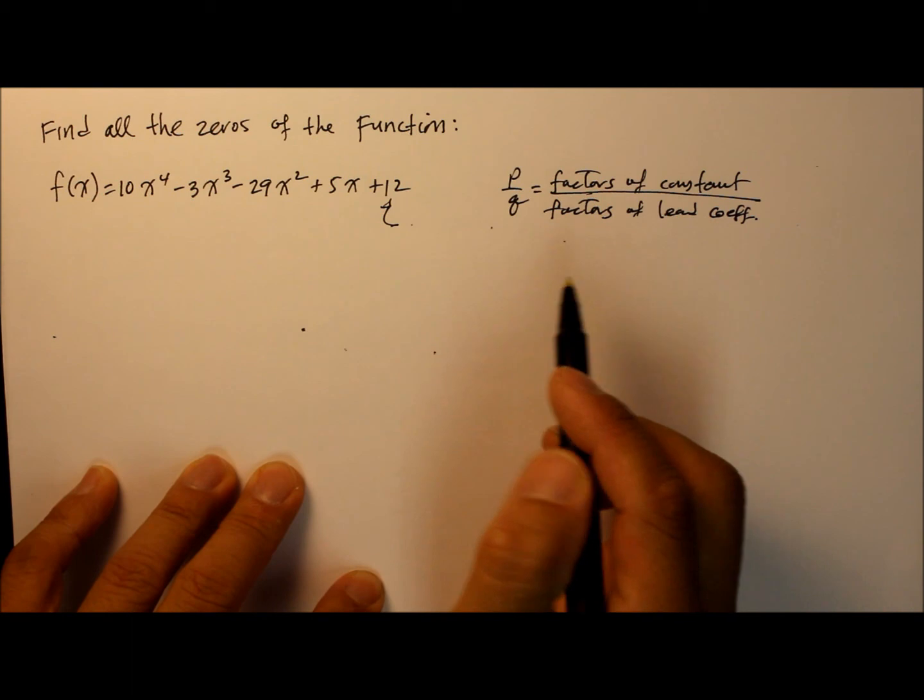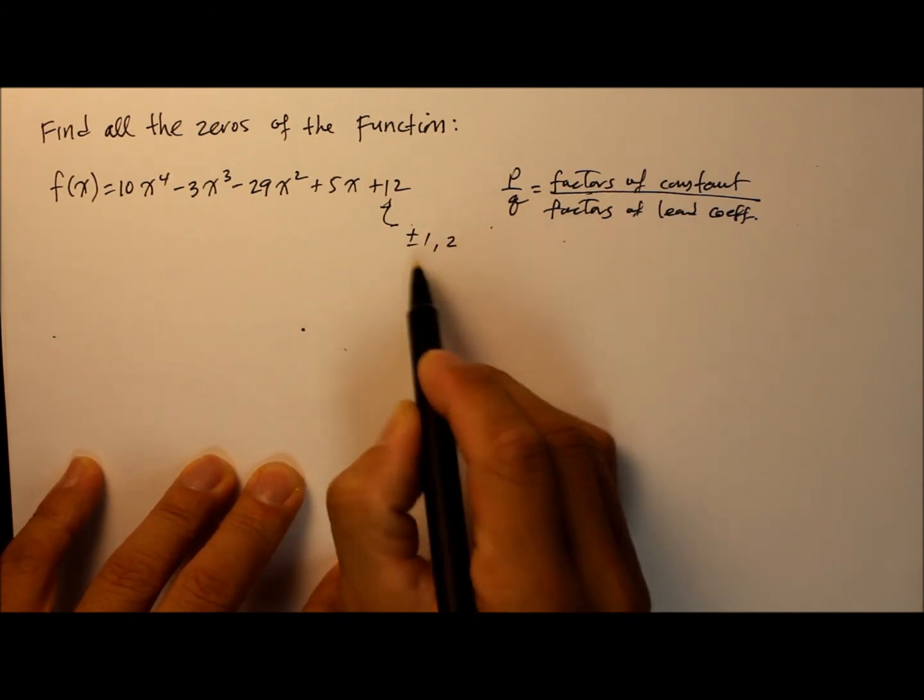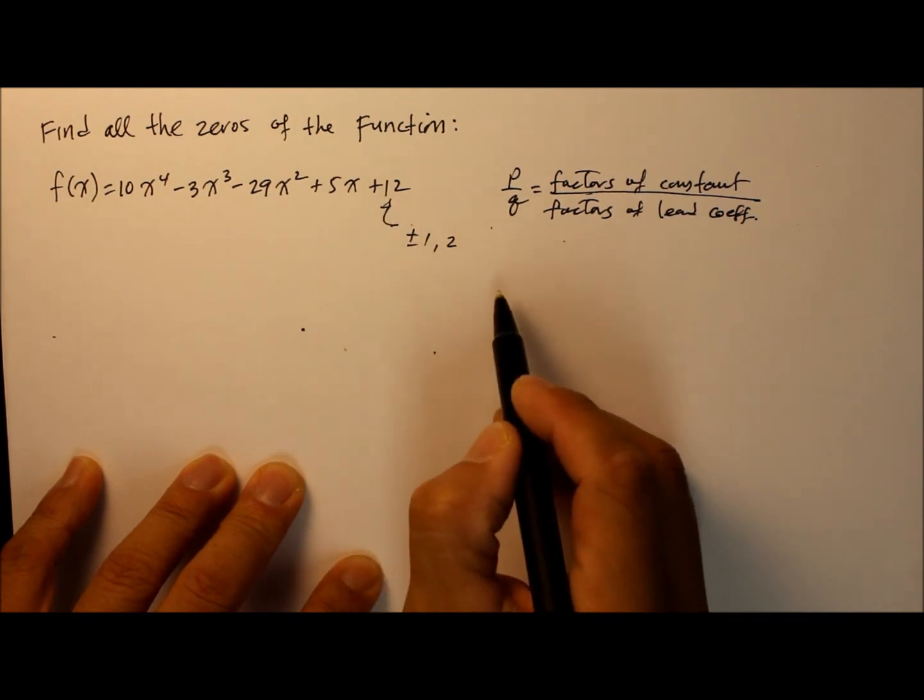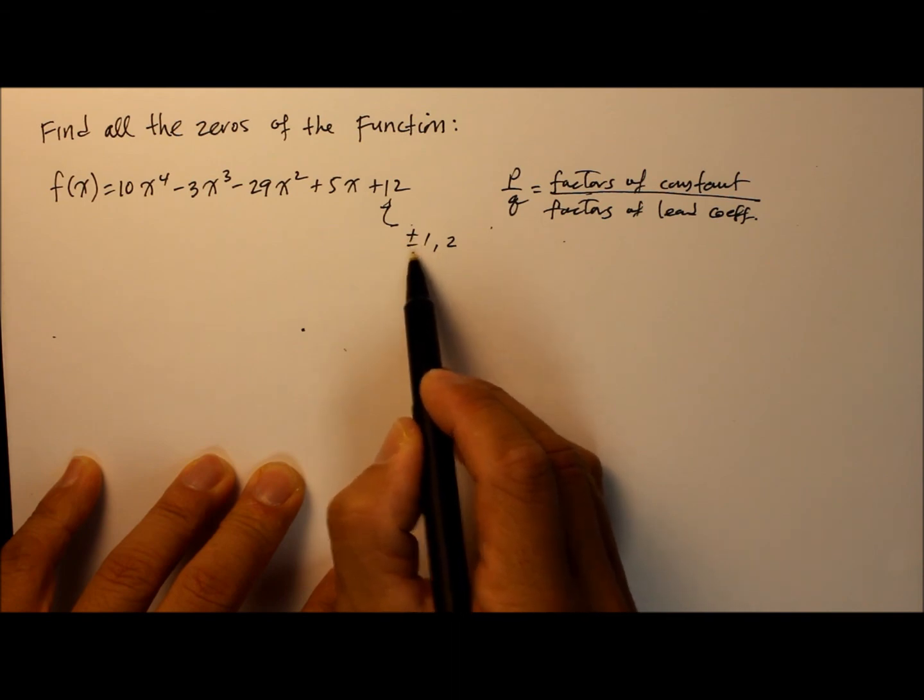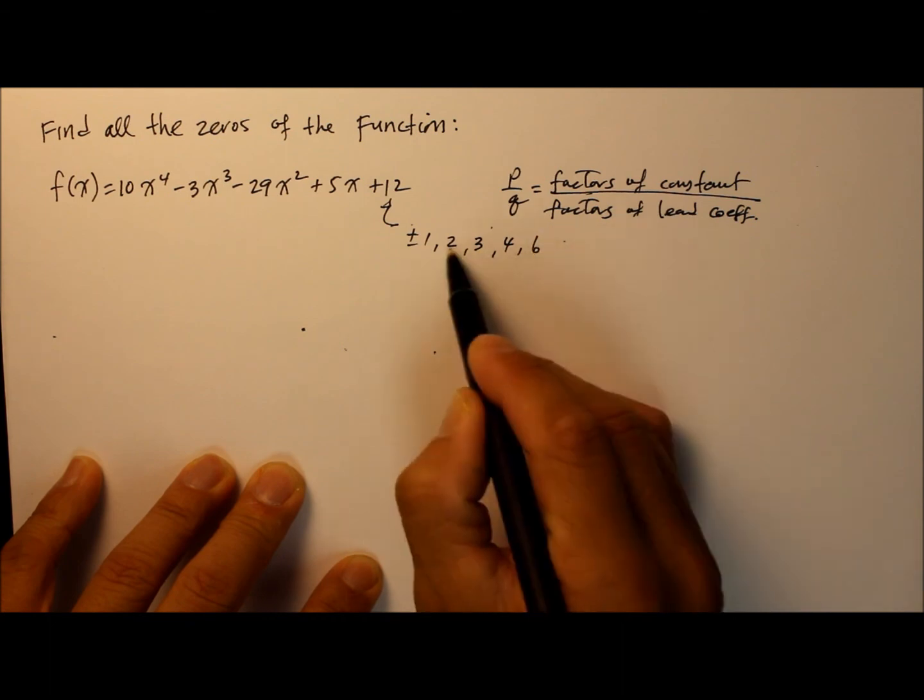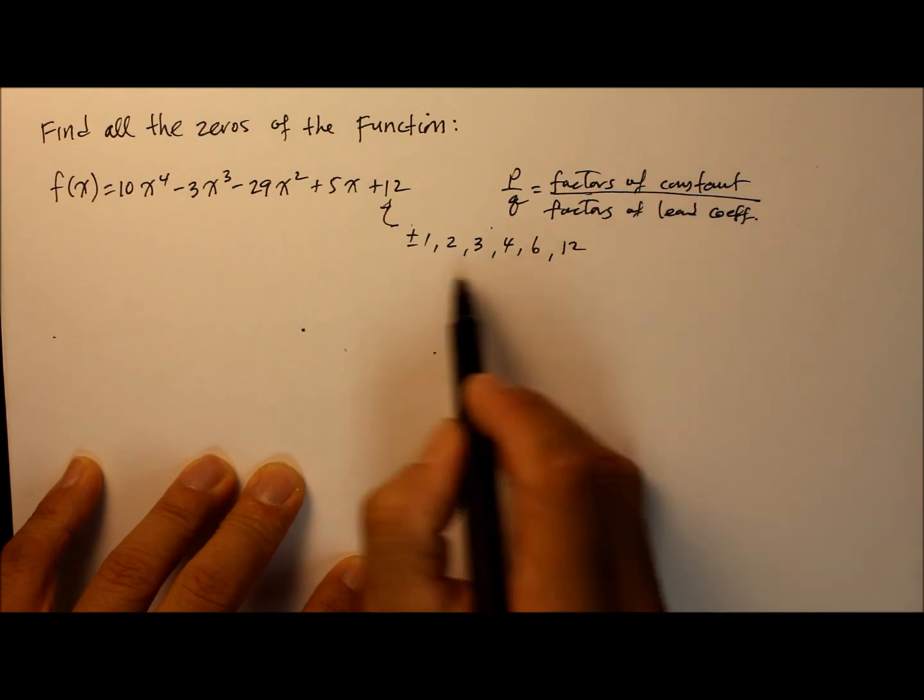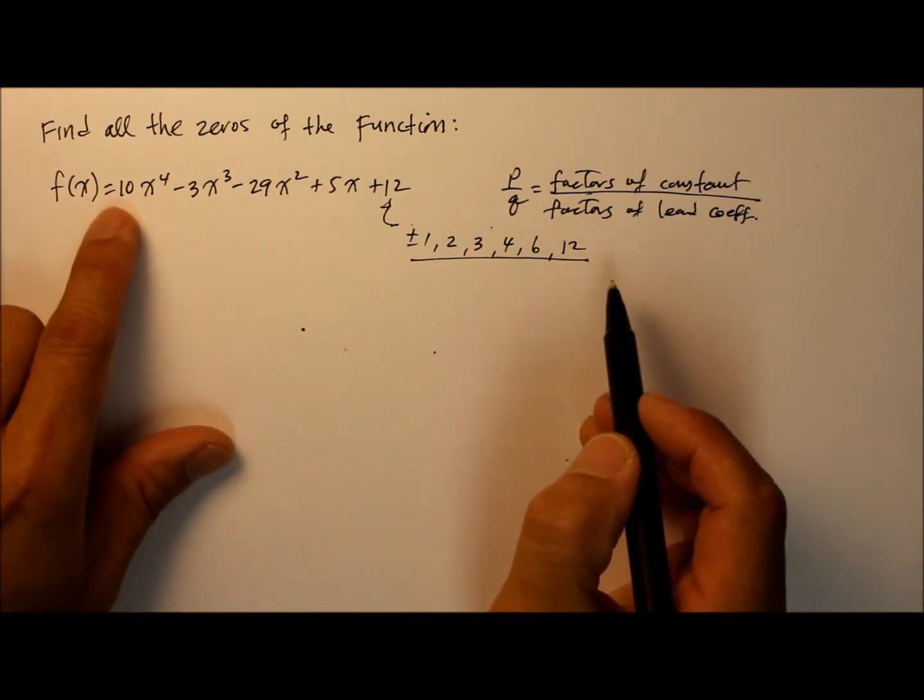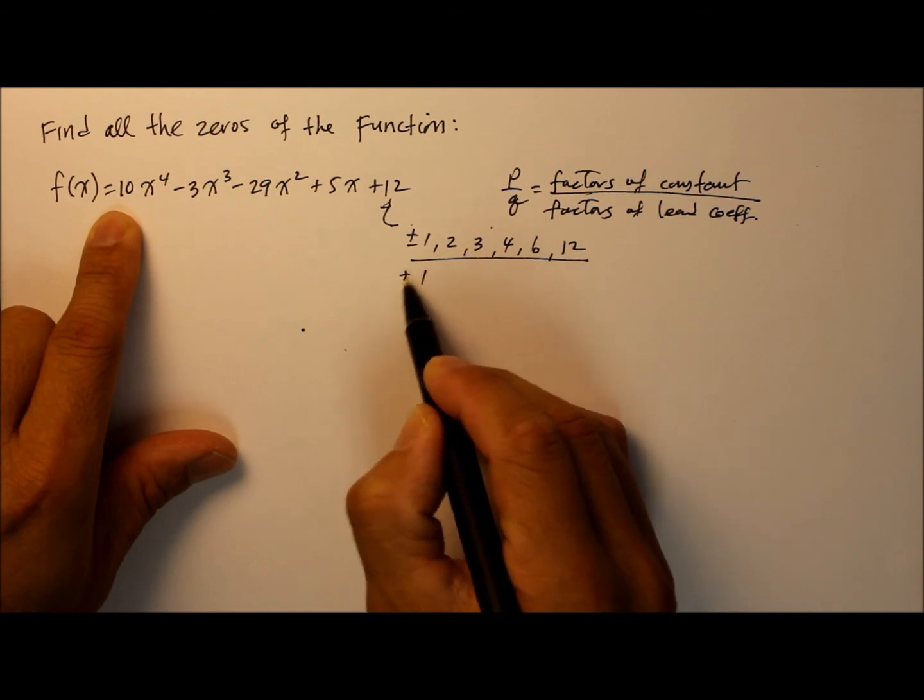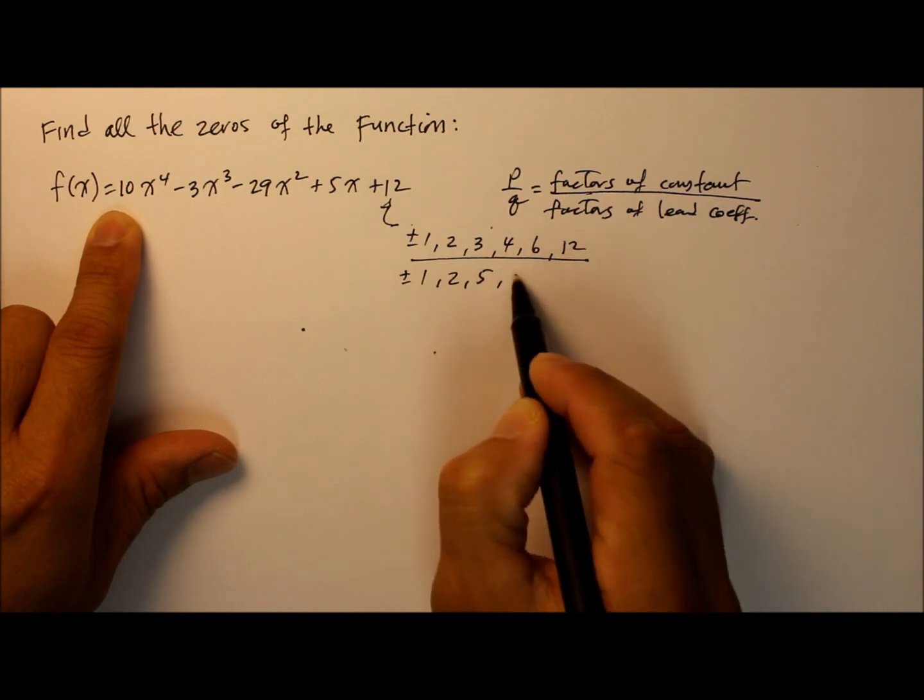The p is all the factors of the constant. So twelve, all the factors are positive and negative one, two, three times four is twelve, so four is in there, six times two is twelve, and twelve. And the q represents all the factors of the leading coefficient, which is positive minus one, two times five, five, and ten.